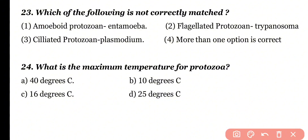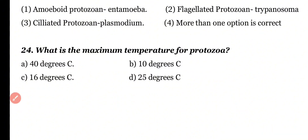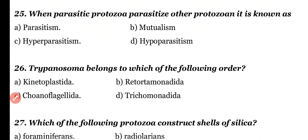Question number 24: What is the maximum temperature for protozoans? 40°C, 10°C, 16°C, or 25°C? Correct answer is option A. 40 degrees centigrade is the maximum temperature for most protozoans.